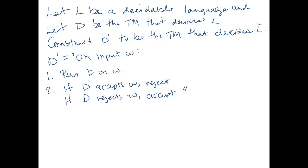Okay, so all we do is we reverse the answer that D gives us, and that will give us the decider for L complement, given that D is a decider for L.